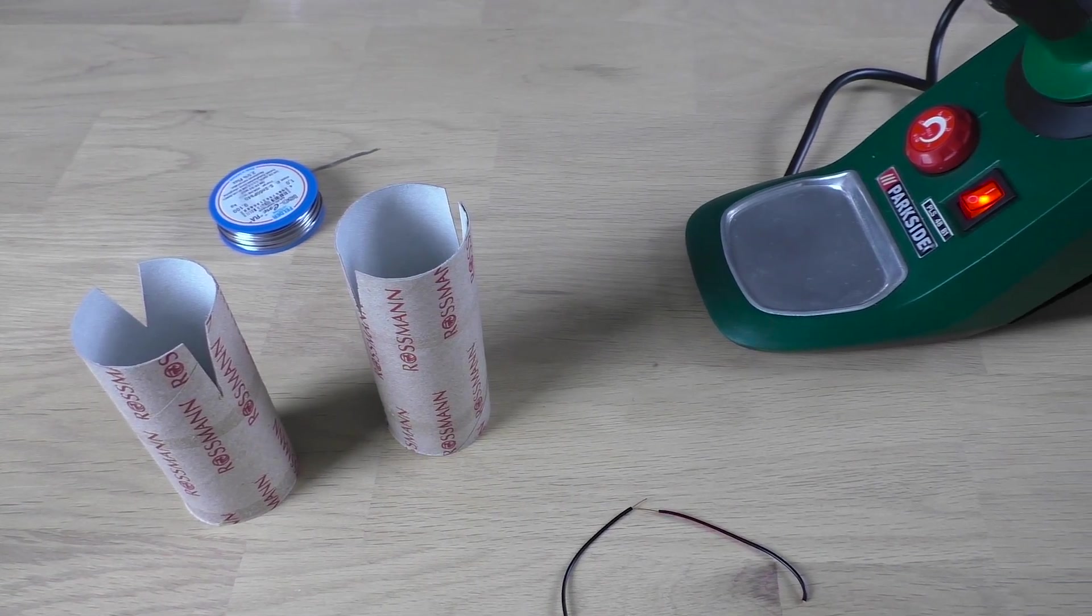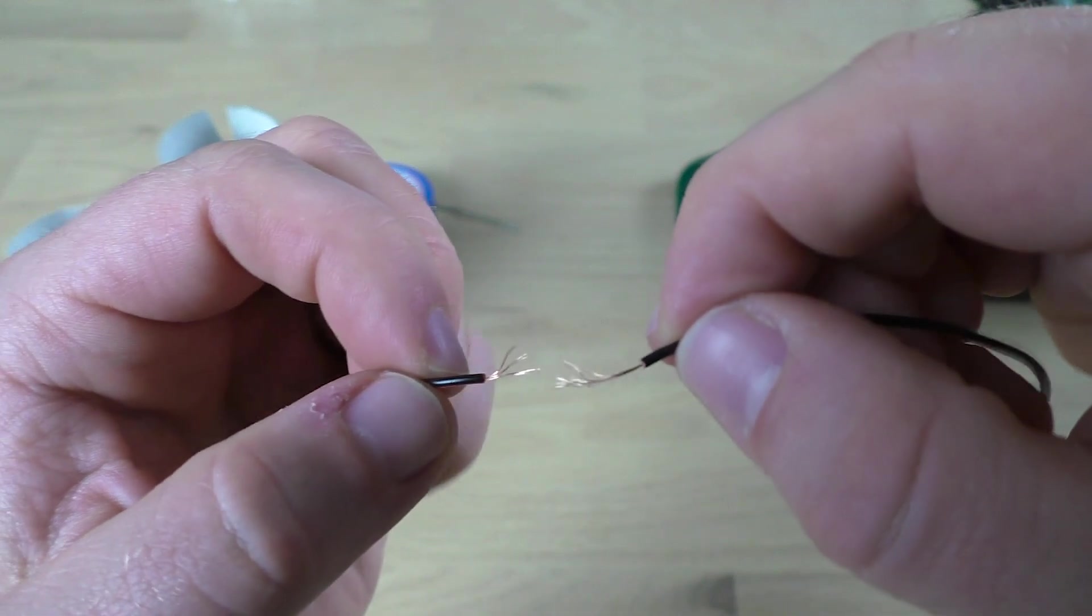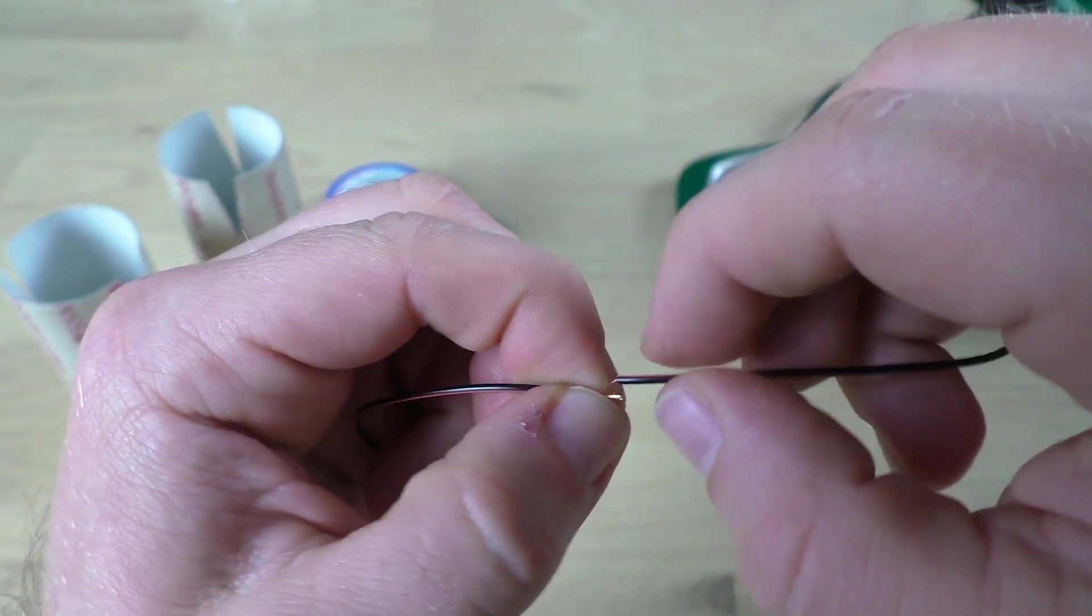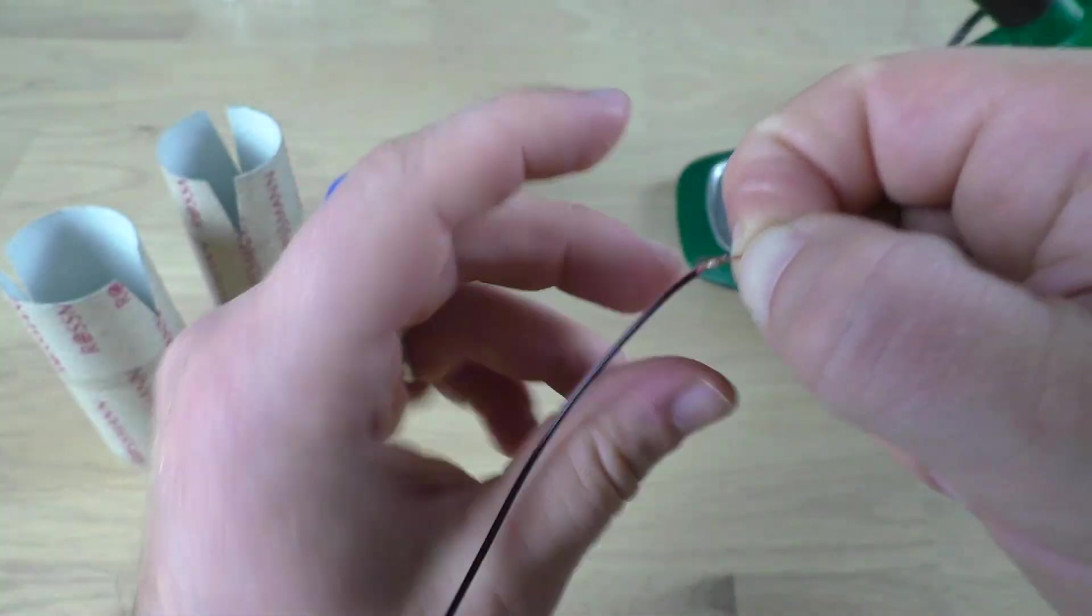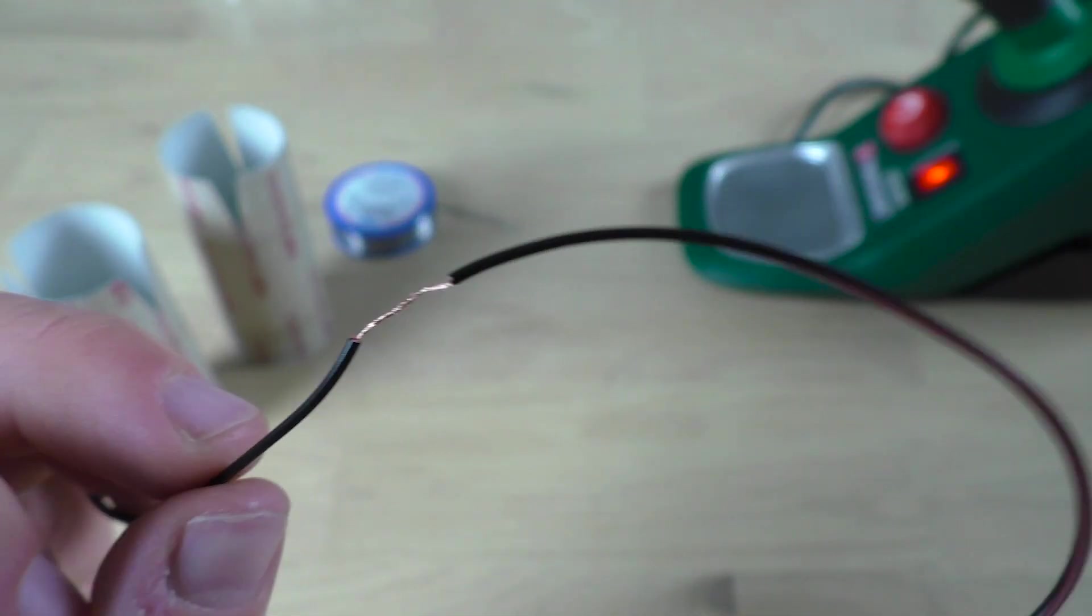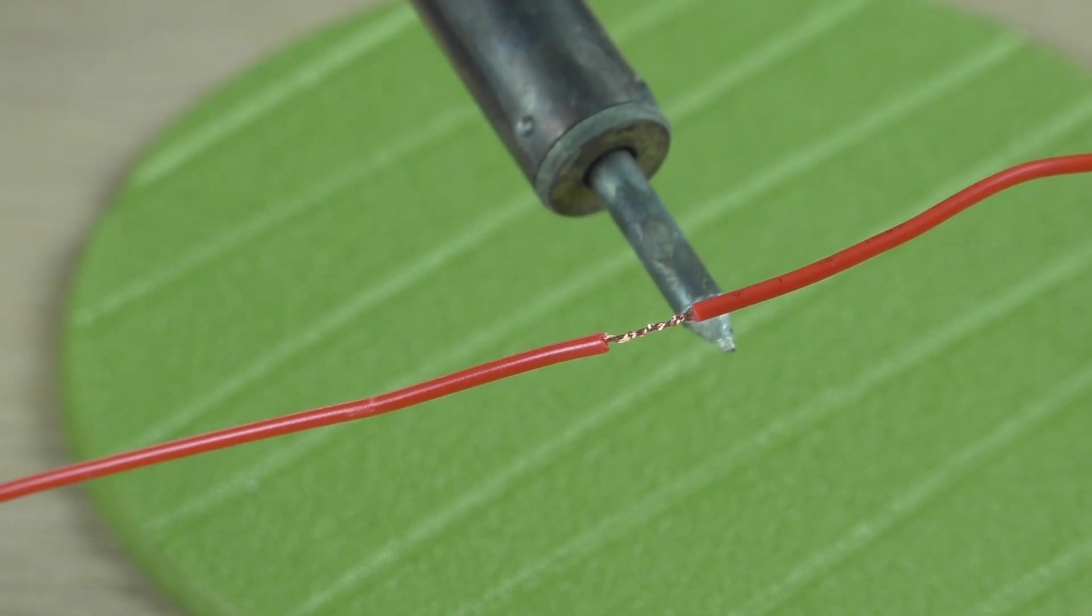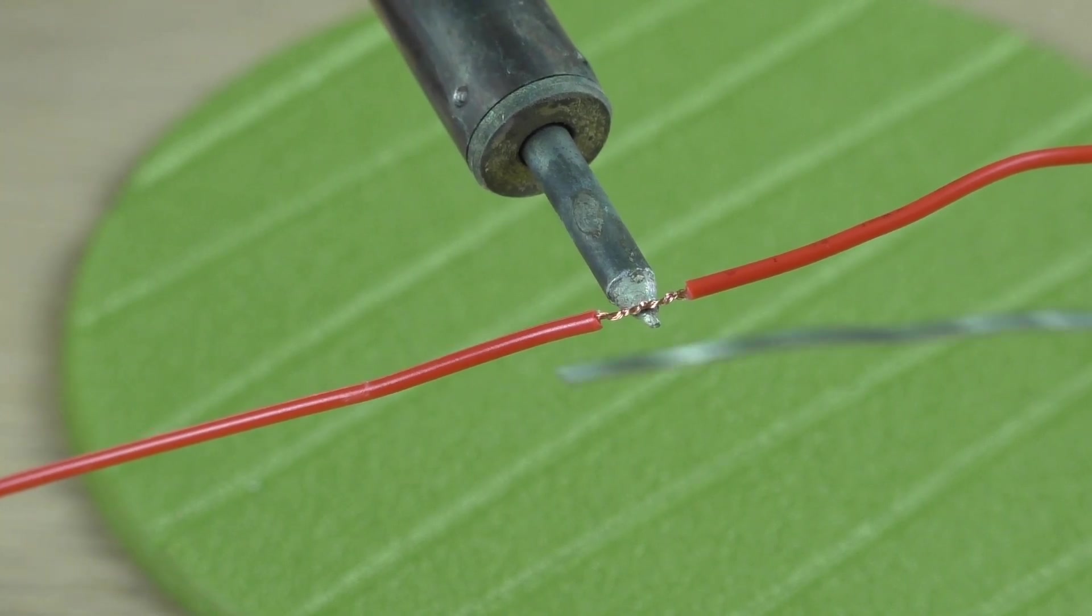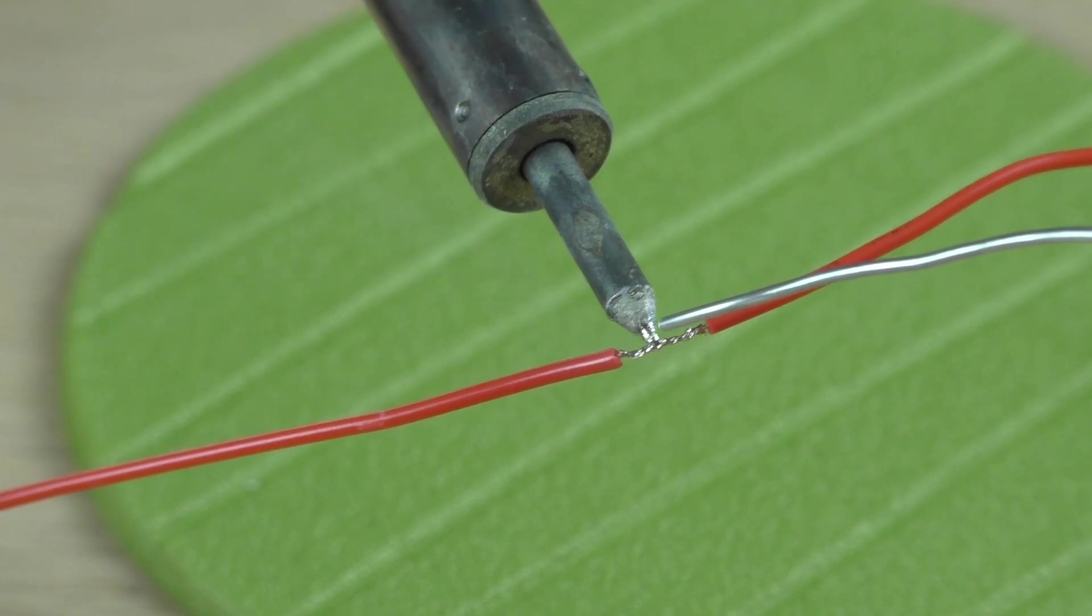A much better way is to actually solder the wires together. Twist the strands as before, hold them in place, and finish with a bit of solder.